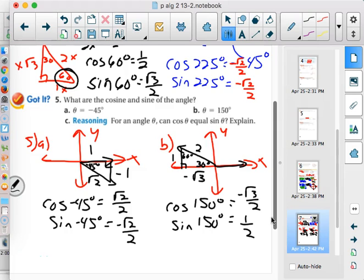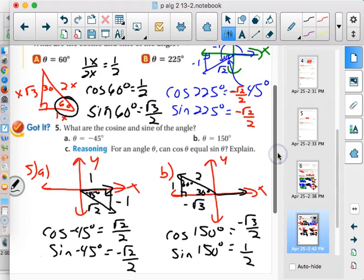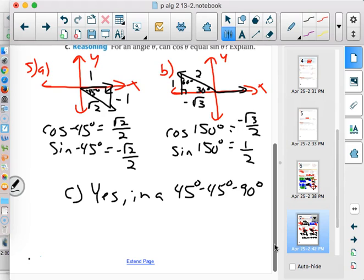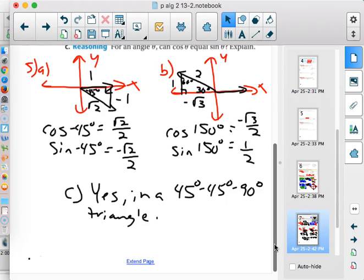Now, it says for an angle θ, can cosine θ ever equal sine θ? Wait a minute. It happened here. Why did it happen in the 45-45-90? We have two sides. It's isosceles. Two of the sides are the same. So, the answer to their little question is yes. In 45-45-90 triangle. Definitely. Now, it's going to depend on which quadrant it's in. You know, we can get the positives and the negatives to match. But you definitely can get those to be the same. It's going to work.